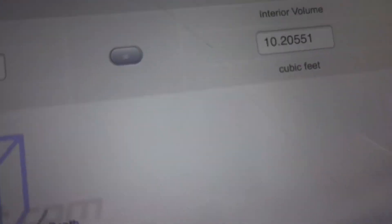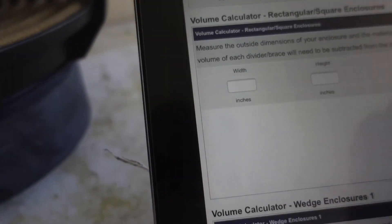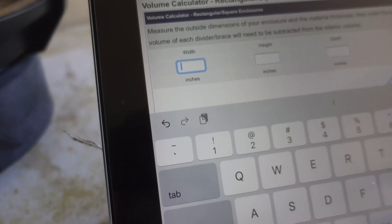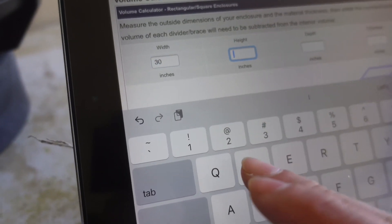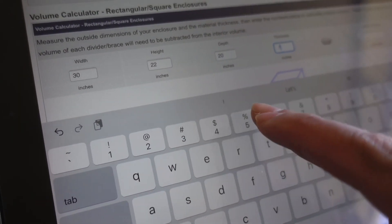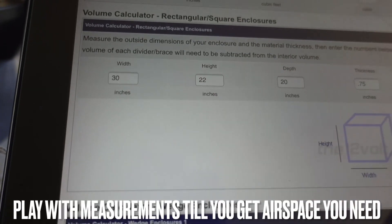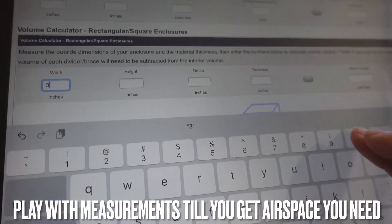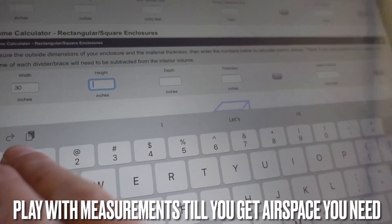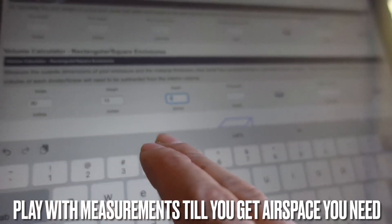Let's do 30 width, height 22, depth 20.75, which equals 6.25. That's still kind of a lot. What we're going to do is keep the 30 width because the subs need to have their own space.